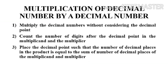Next is multiplication of decimal number by a decimal number. Here, we multiply the decimal numbers without considering the decimal point — that is, we multiply them as whole numbers. Then count the number of digits after the decimal point in both the multiplicand and multiplier. Then place the decimal point such that the number of decimal places in the product equals the sum of the number of decimal places of the multiplicand and multiplier. Let me explain it with examples.